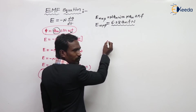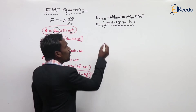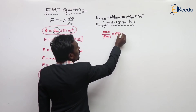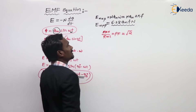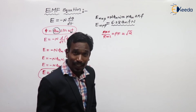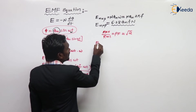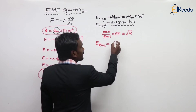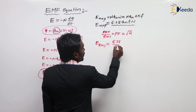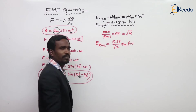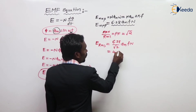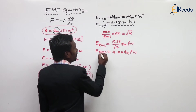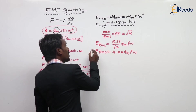If you want the RMS value, we know that RMS value = peak value / √2 (peak factor for sinusoidal analysis is √2). So ERMS = Emax / √2 = 6.28 / √2 × φm × f × N = 4.44 × φm × f × N. This is our ERMS value.